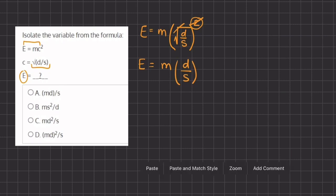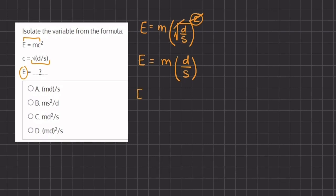So now we can multiply these two expressions together. So we have E equals m times d, which is md divided by s.